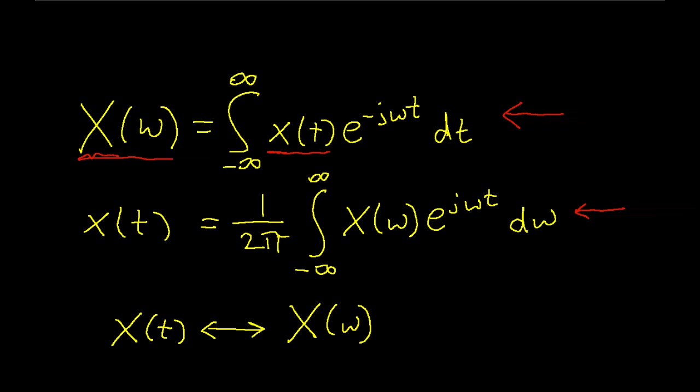Going from the frequency domain back to the time domain is actually pretty similar. I don't have the negative sign on the exponent, and I integrate with respect to omega. But again, given a transform X(ω), this will give me x(t). And I represent the fact that x(t) and X(ω) are related through the Fourier transform by this notation.